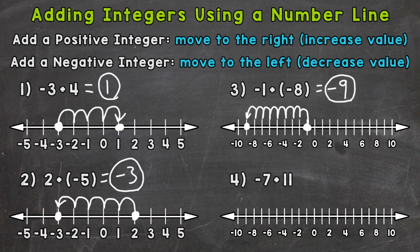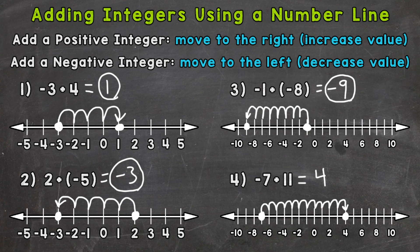Lastly, number four: we have negative seven plus eleven. We start at negative seven and add a positive eleven, so we are increasing in value — we need to move to the right on the number line. Starting at negative seven, between negative six and negative eight, we increase by eleven spots: one, two, three, four, five, six, seven, eight, nine, ten, eleven. We end up at positive four. So negative seven plus eleven equals positive four.